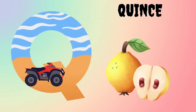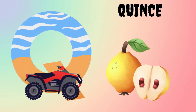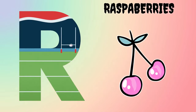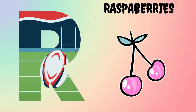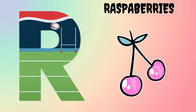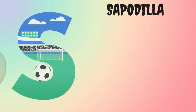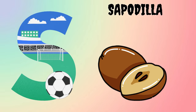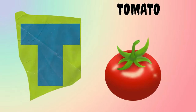Q is for Quince. R is for Raspberries. S is for Sapodilla. T is for Tomato.